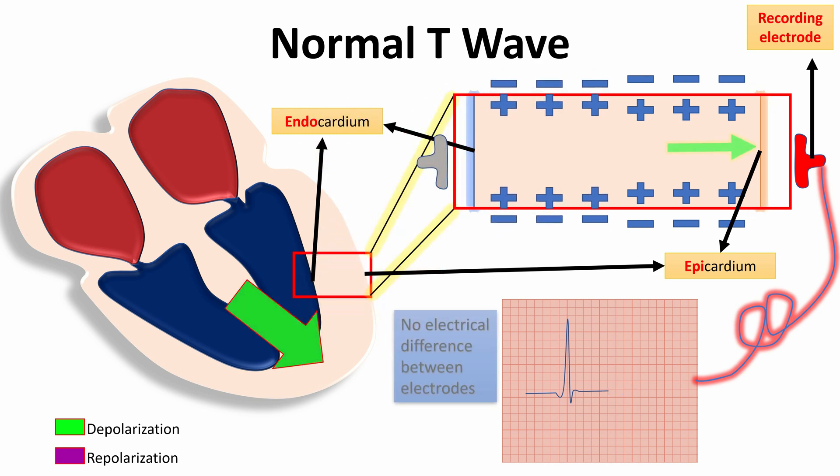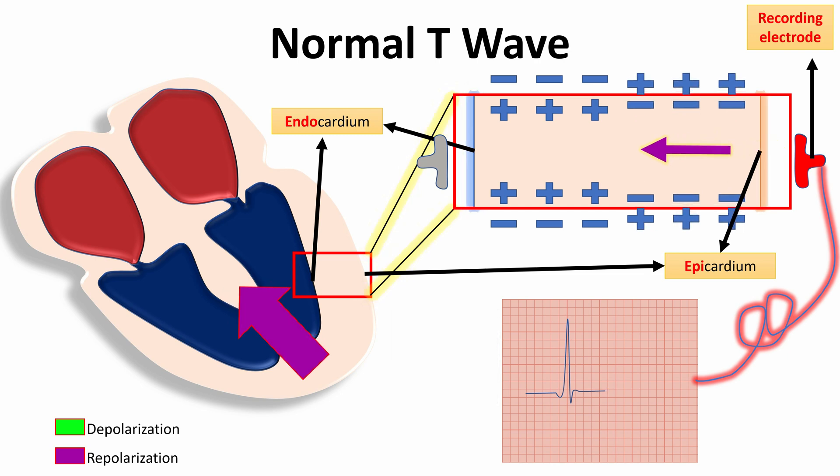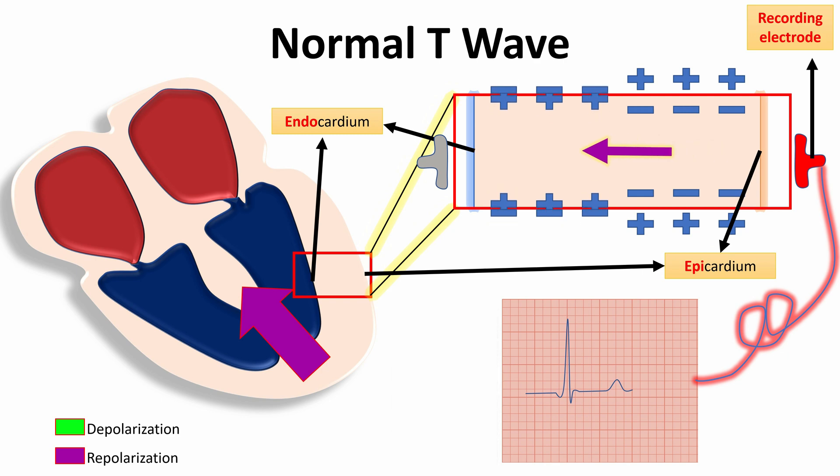Actually, when depolarization ends, repolarization starts in opposite way of depolarization, which means that the last cell to be depolarized is the first cell to repolarize. And repolarization will start from the epicardium toward the endocardium, and the recording electrode will record the positive charges of the cells that become in the resting phase in difference to the other electrode, and this causes a positive T-wave because of the opposite charges and opposite direction.